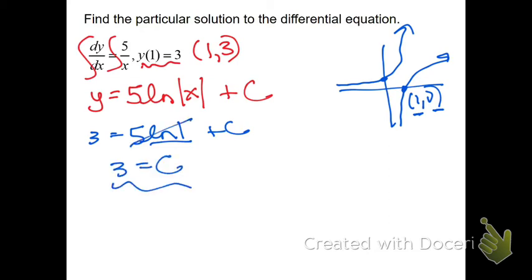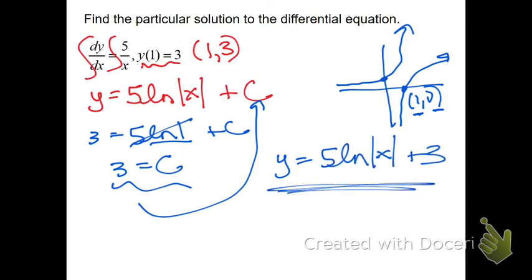Now you can't just leave it c equals 3. That's not the answer. You have to make sure you go back and plug it back in. So y equals 5 natural log of x plus 3. That's the solution to this differential equation. Easy enough. Just got to get back into the groove of doing your derivatives and integrals.